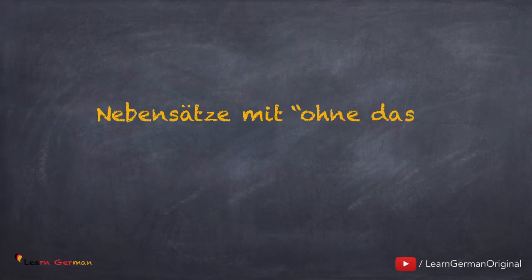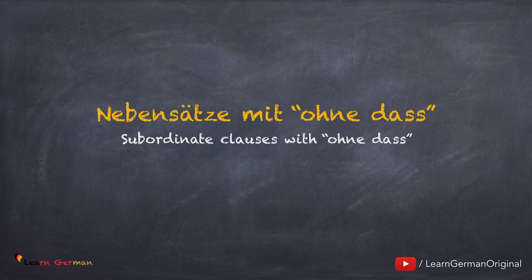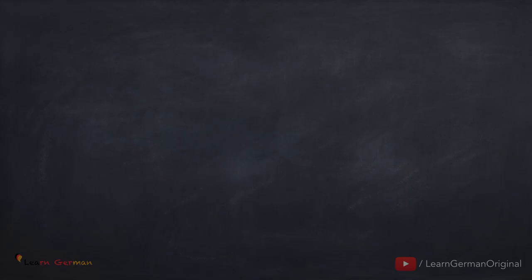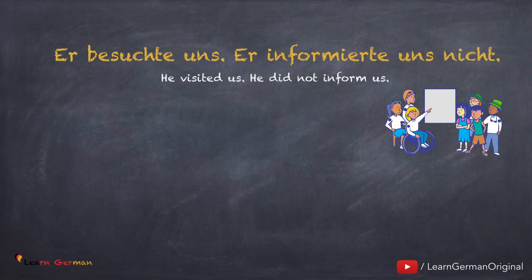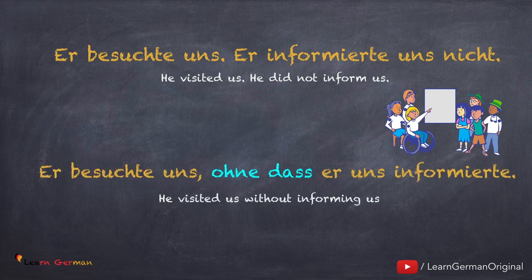Jetzt lernen wir, wie man Nebensätze mit ohne dass bildet. Ohne ist eine Akkusativpreposition, aber zusammen mit dass funktioniert es als eine Konjunktion. Hier sind zwei normale Sätze: Er besuchte uns. Er informierte uns nicht. Normalerweise wird man immer vor einem Besuch informiert. In diesem Fall ist die Aktion, dass er uns nicht informierte, unerwartet. Deshalb sagt man: Er besuchte uns, ohne dass er uns informierte.